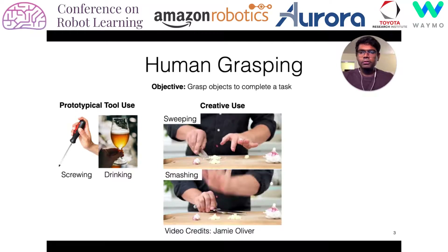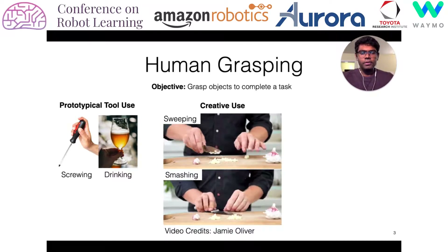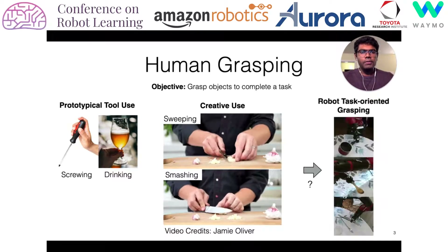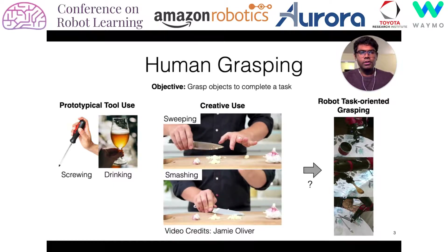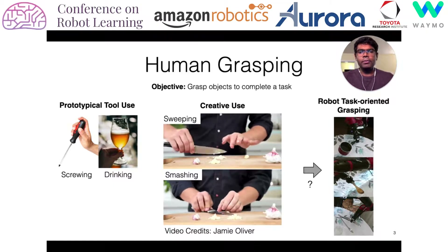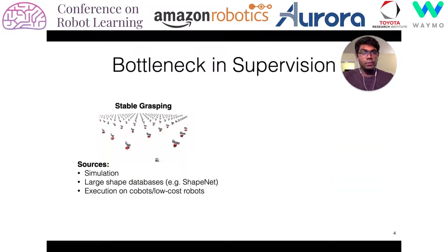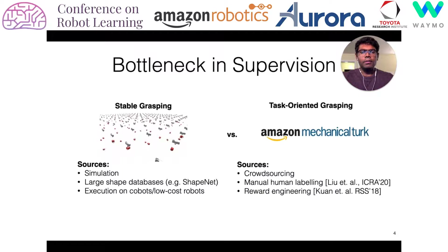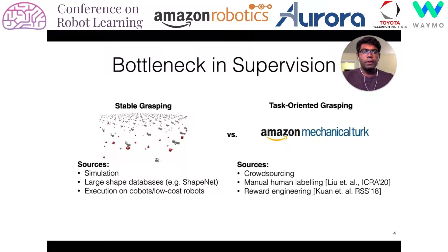Be it prototypical tool use or even creative uses. But it's been very hard to teach robots task-oriented grasping, because there's a big bottleneck in terms of supervision. Stable grasping has a lot of sources of data like simulation, ShapeNet, and so on. But for task-oriented grasping, we've proposed crowdsourcing, but prior work has mainly relied on manual human labeling or reward engineering.